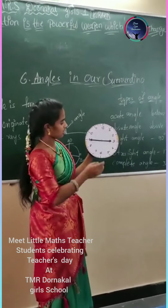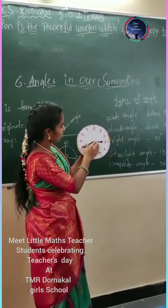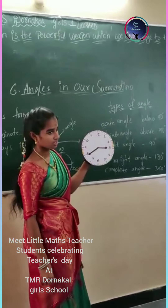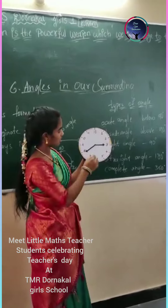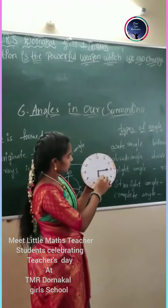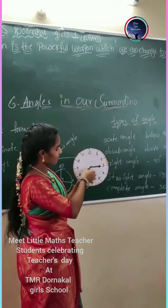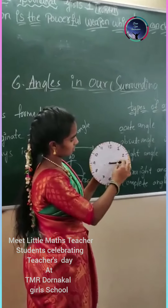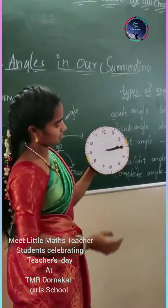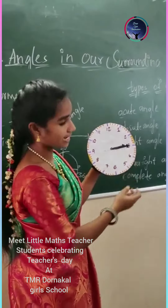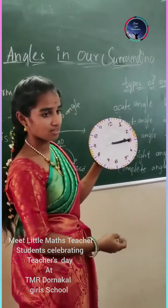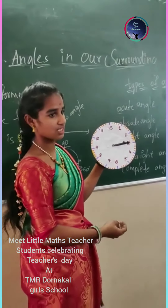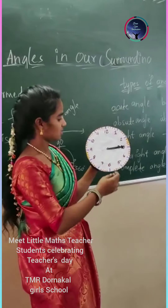360 degrees is the total complete angle. What is this degree? Complete angle means 360 degrees.